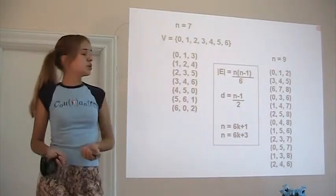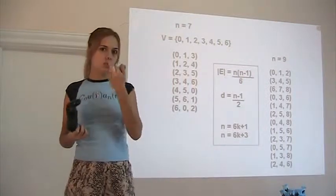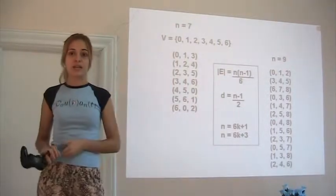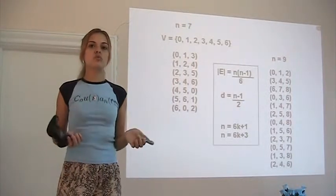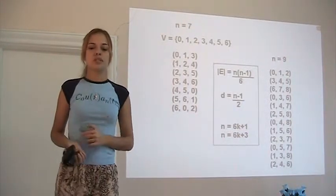The thing that we're going to be interested in about the Steiner triple systems is to look for packings in them. So a packing is a subset of the edges, such that no two edges overlap in any vertex.